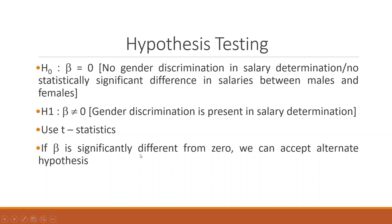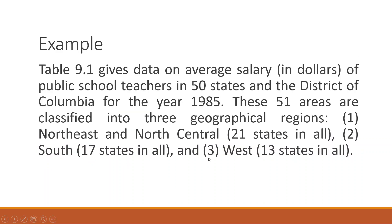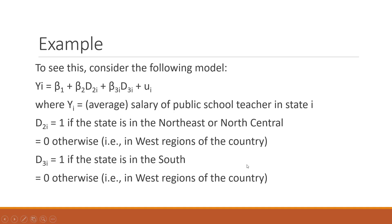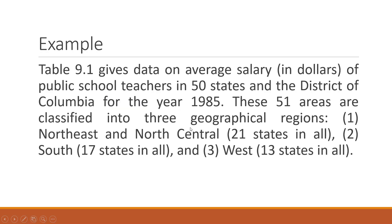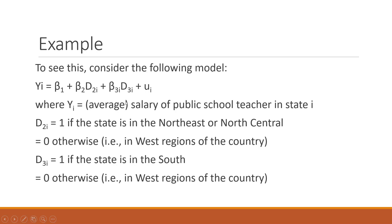We will take an example from Table 9.1 of the Damodar Gujarati dataset. The data gives average salaries of public school teachers in 50 states and the District of Columbia for 1985. The 51 areas are classified into three geographical regions: Northeast and North Central (21 states), South (17 states), and West. The model is Y_i = beta1 + beta2*D2i + beta3*D3i + mu_i with two dummies, because for three regions, the number of dummies is always one less than the number of categories — this avoids the dummy variable trap.